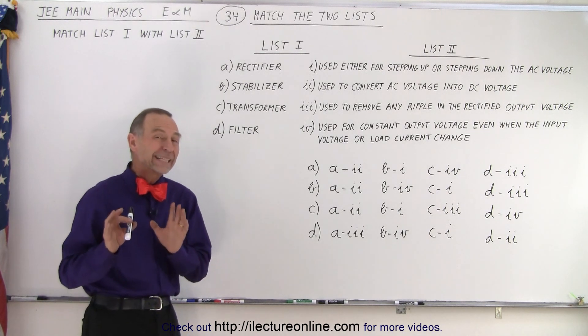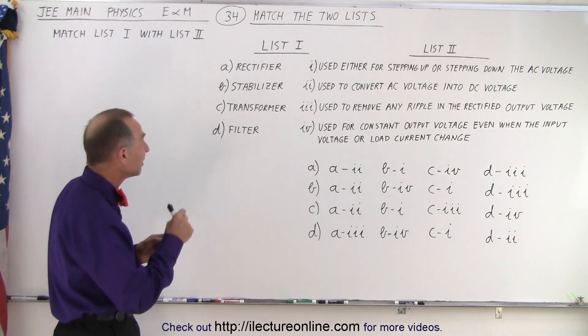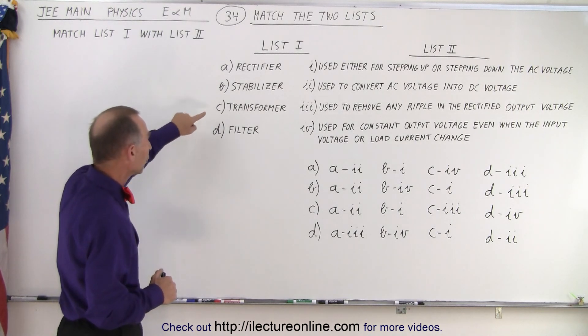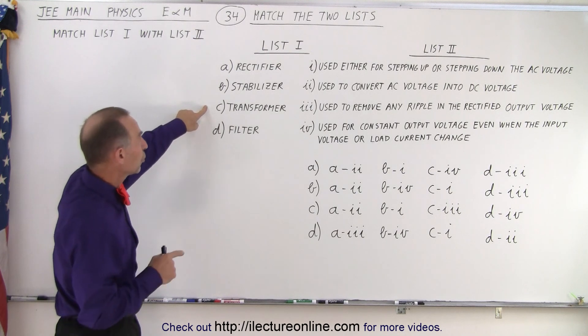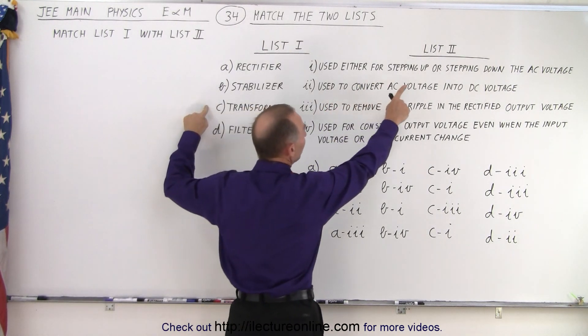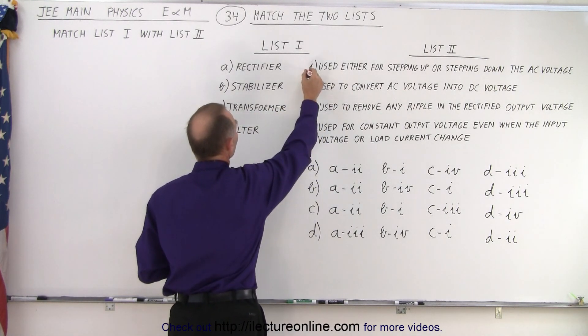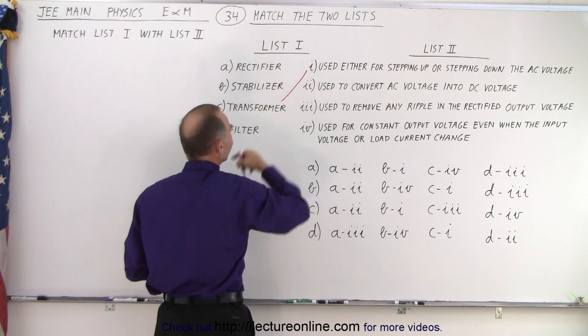So we can probably do this one easily, or quickly I should say, if we go for the easy ones first. How about transformer? Notice we can really quickly say a transformer is used either for stepping up or stepping down the AC voltage. So let's make that match.